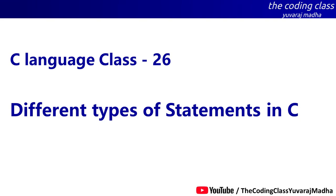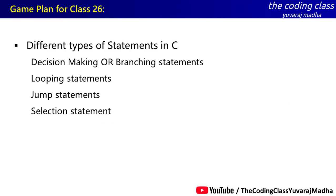Hello guys, welcome to the coding class, class number 26. In this class, we will explain different types of statements in C language. We will explain the decision making statements, looping statements, jump statements, and selection statements.